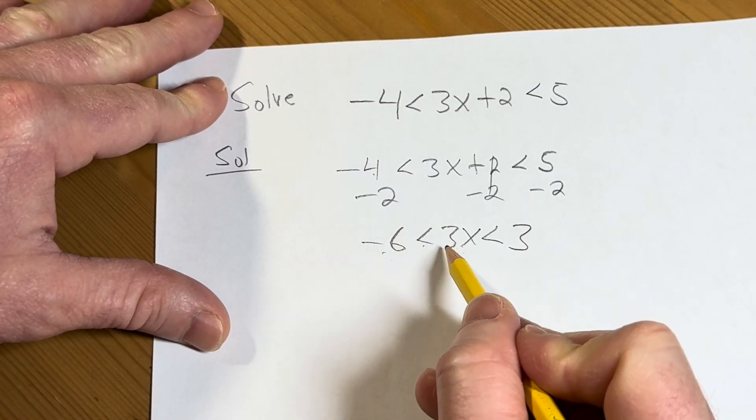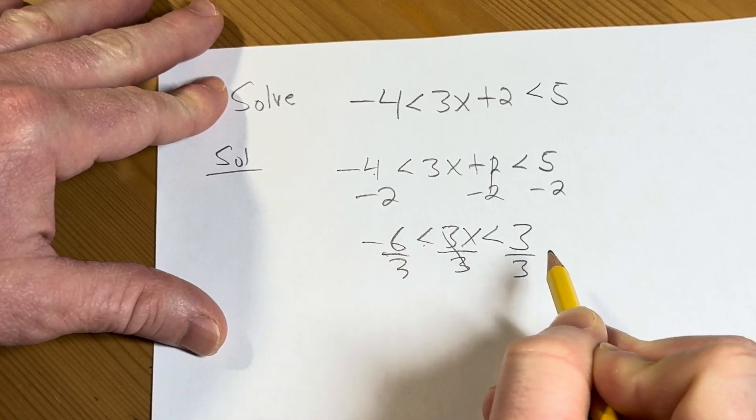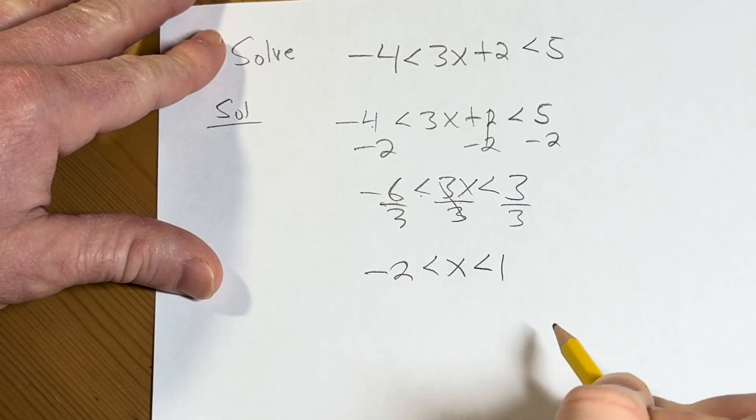And so now to finish, we can divide everything by 3. 3 is a positive number, so there's no flipping of signs or anything. This is negative 2, less than x, less than 1.